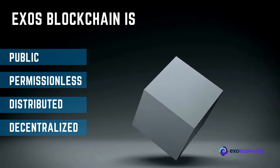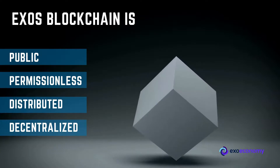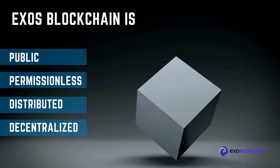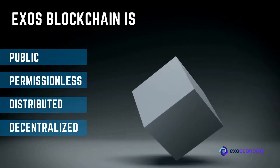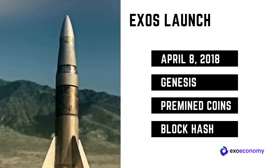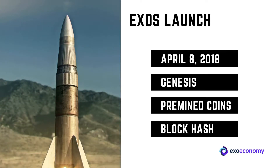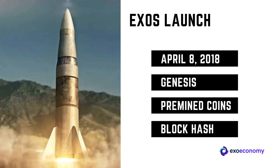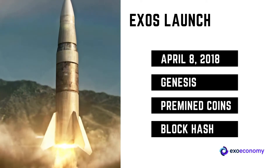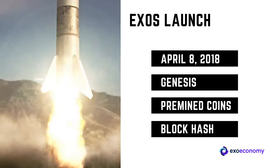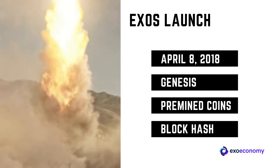So how is the Exos blockchain built? Exos blockchain is built to be public, permissionless, distributed, and decentralized. Exos blockchain was launched on the 8th of April 2018 with a Genesis block hash, which included 300 million pre-mined coins.